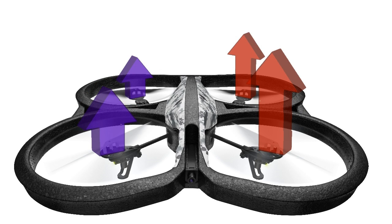To roll to our left, the drone will increase the power to the motors on the right, which increases the thrust shown by red arrows, and decreases the power to the motors on the left. The reduced thrust is shown by blue arrows. The resulting net force will roll the drone to our left. Notice I mentioned our left — as the drone is facing towards us, it would be called rolling to its right. This situation is called control reversal by drone operators and can be a source of confusion in mishaps during flight.